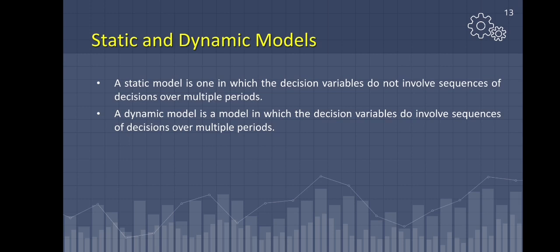The next model is static and dynamic models. A static model is one in which the decision variables do not involve sequences of decisions over multiple periods. A dynamic model is a model in which the decision variables do involve sequences of decisions over multiple periods.